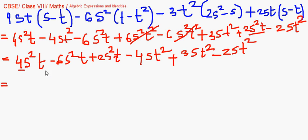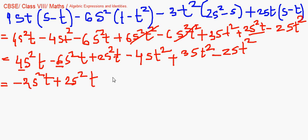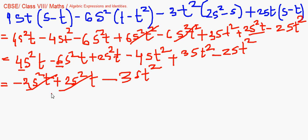4 minus 6 gives us minus 2, and then with plus 2s²t as well, the s²t terms cancel. For the st² terms: minus 4 plus 3 gives minus 1, so minus st². And with minus 2 more, that makes minus 3st². So the answer for this expression is minus 3st².